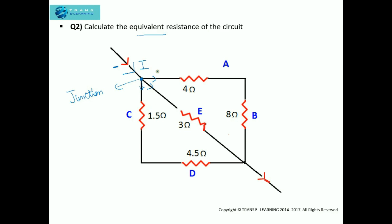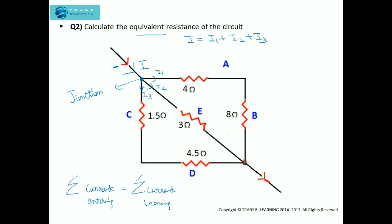So I will take the currents I1, I2, and I3. That means the current I is getting divided into currents I1, I2, and I3. Taking into consideration Kirchhoff's law, which says that the total current entering the junction is equal to the total current leaving the junction. So the current I should leave the circuit, and since I equals I1 plus I2 plus I3, these three currents should all reach at the exit point.